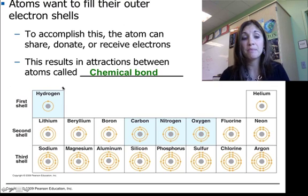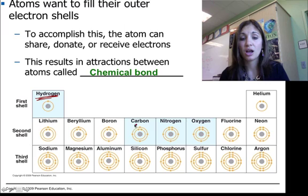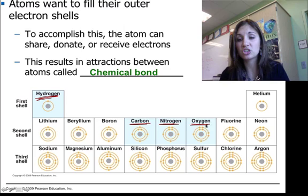You can see here some of the main atoms that we're interested in. Here are our big ones. Let's find them: hydrogen, carbon, nitrogen, and oxygen. There are our biggies.